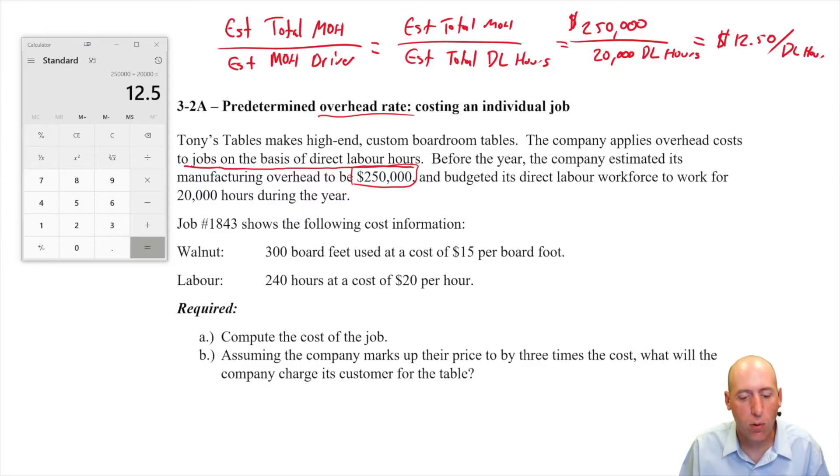Let's read on. Job number 1843 shows the following cost information. Walnut, I guess that's the wood, that's our direct material. We make tables, fancy tables, and so walnut is a fancy wood. I don't know what my table is made of at home, probably not walnut. They use 300 board feet at a cost of $15 a foot. So let's figure out how much material was used. 300 times 15 is $4,500 worth of material. And that is our DM cost. It took $4,500 of wood to make this table.